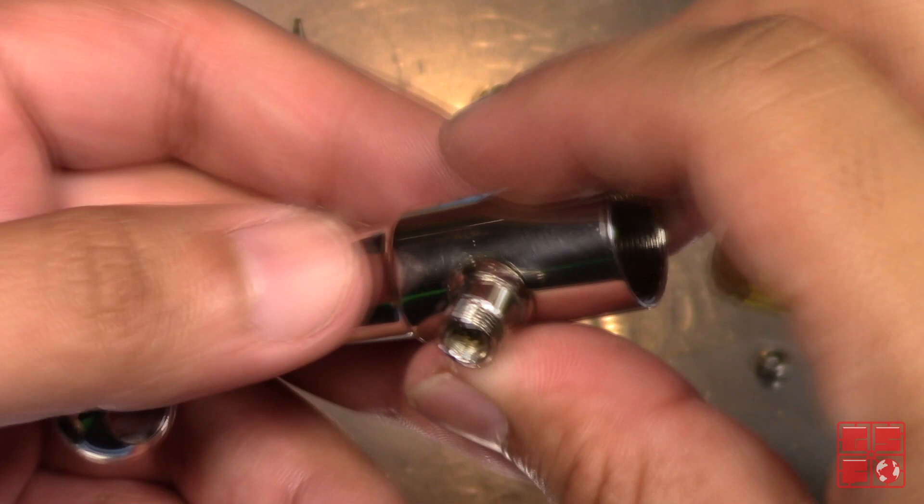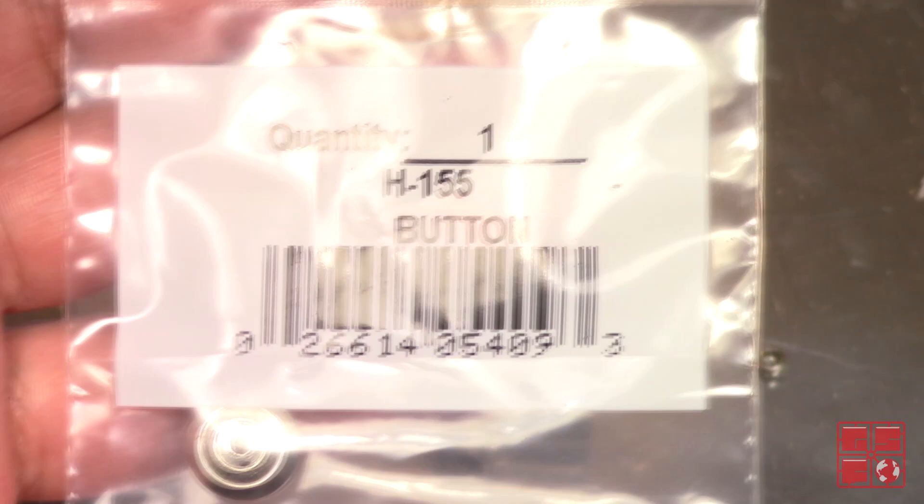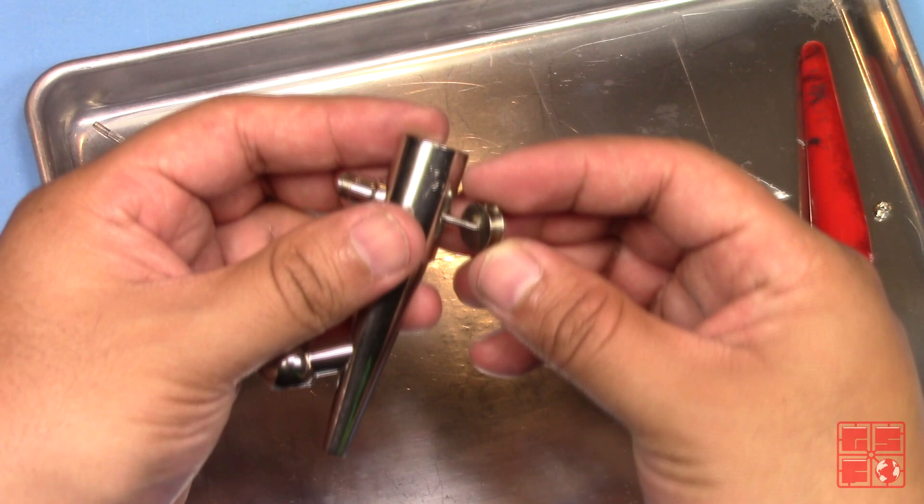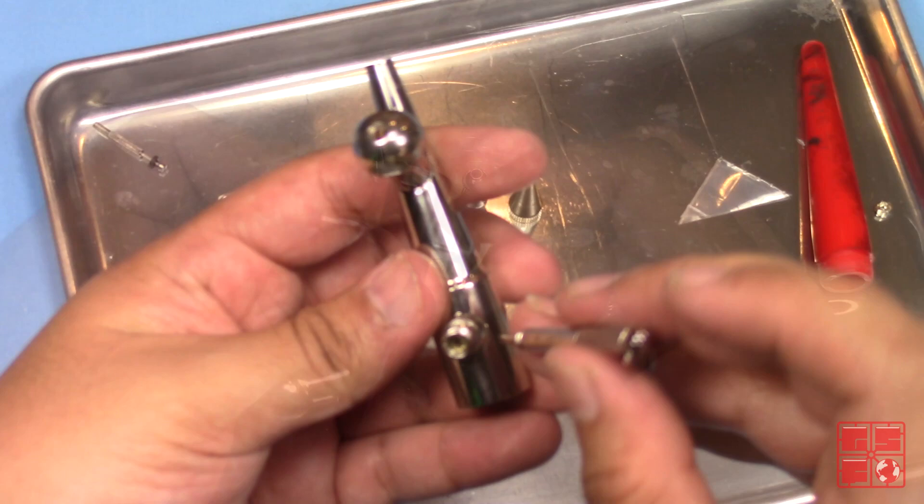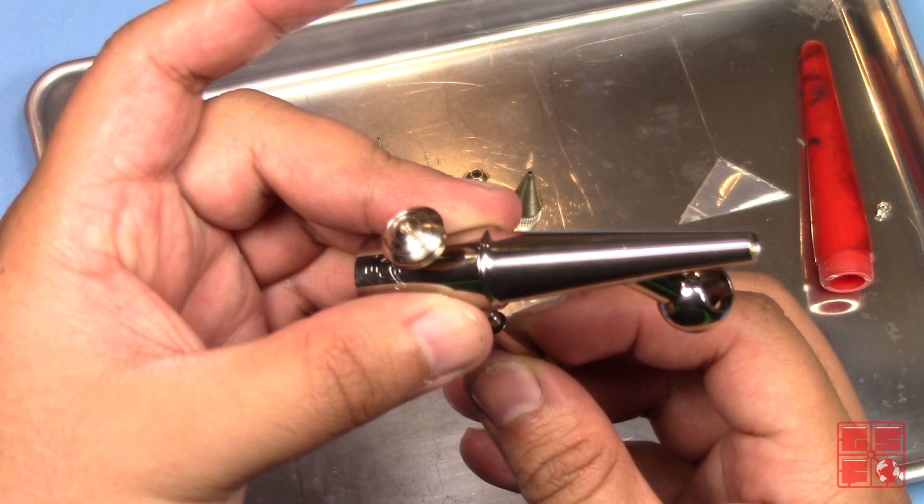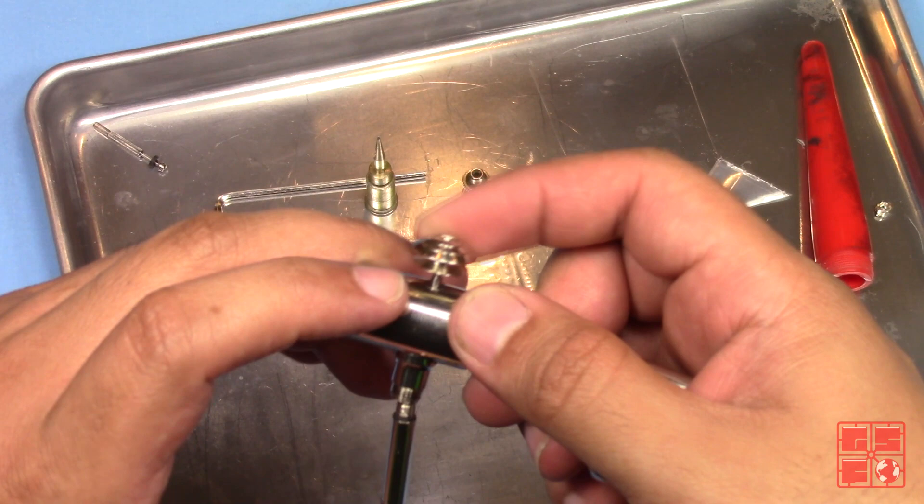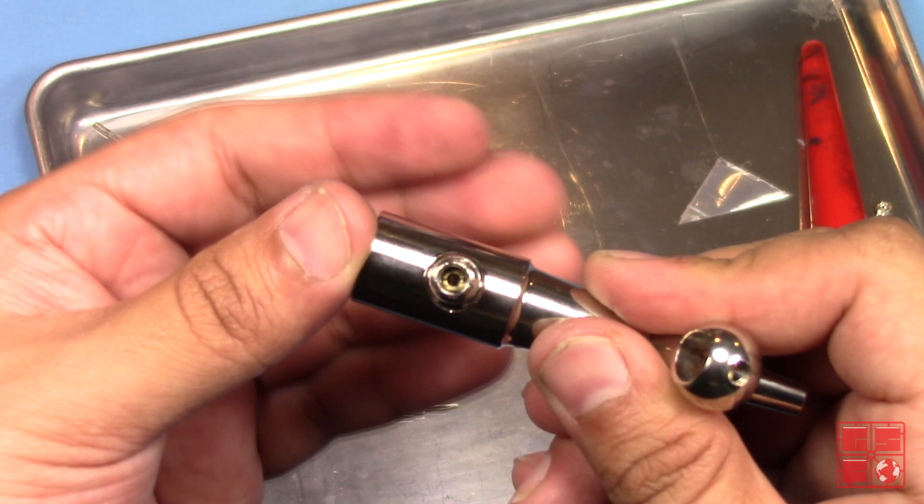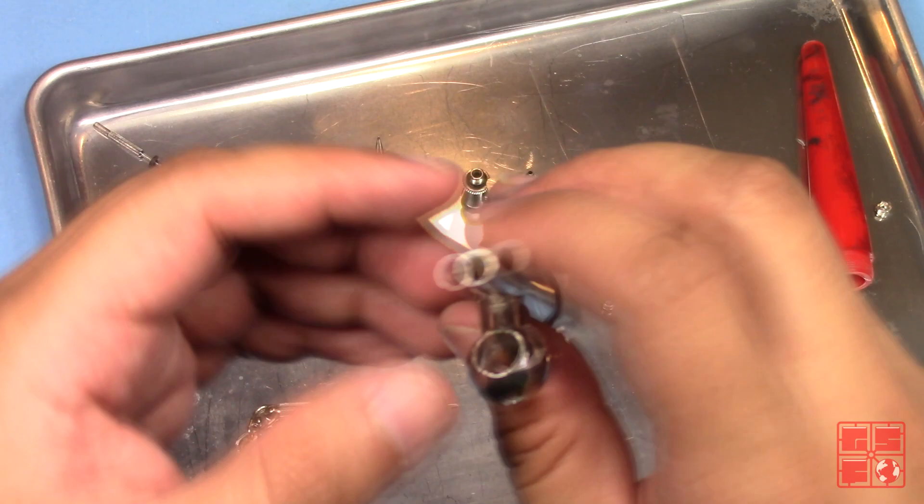To avoid stripping the nut, lightly tighten it. Next I partially thread the trigger button on the air valve plunger. And using a micro flat head screwdriver, I'll hold the valve plunger in place as I screw on the trigger button. To verify it's properly tightened, spin the trigger button both ways and look inside the valve to see if the valve plunger spins along with it.